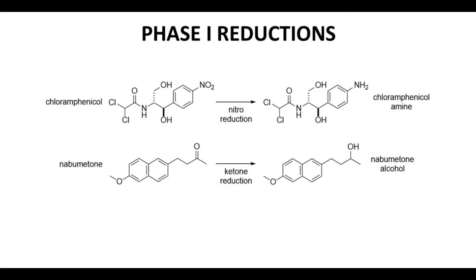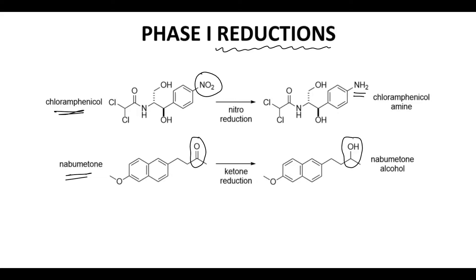After seeing two slides of oxidations, you might think all phase 1 reactions are oxidations — but you can also get reductions. Our first structure in the upper left is chloramphenicol. It has a nitro group, and that nitro group can be reduced to an NH2 group. In the second example, nabumetone contains a ketone, and this ketone can be reduced to the corresponding alcohol. These reactions are not typically performed by the cytochrome P450s, but by a whole family of reducing enzymes found in the body.